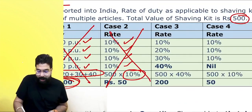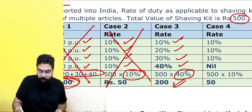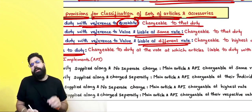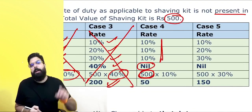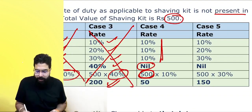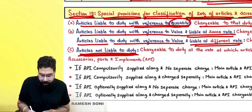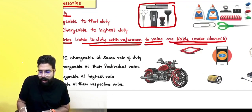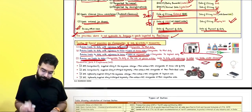Case 3: if articles in the set are liable to duty with reference to value but at different rates, apply the highest rate of duty to the total set value. Case 4: if some articles in the set are not liable to duty, apply the rate applicable to the remaining dutiable items — if they share the same rate, apply that rate; if different rates, apply the highest rate to the total set value.